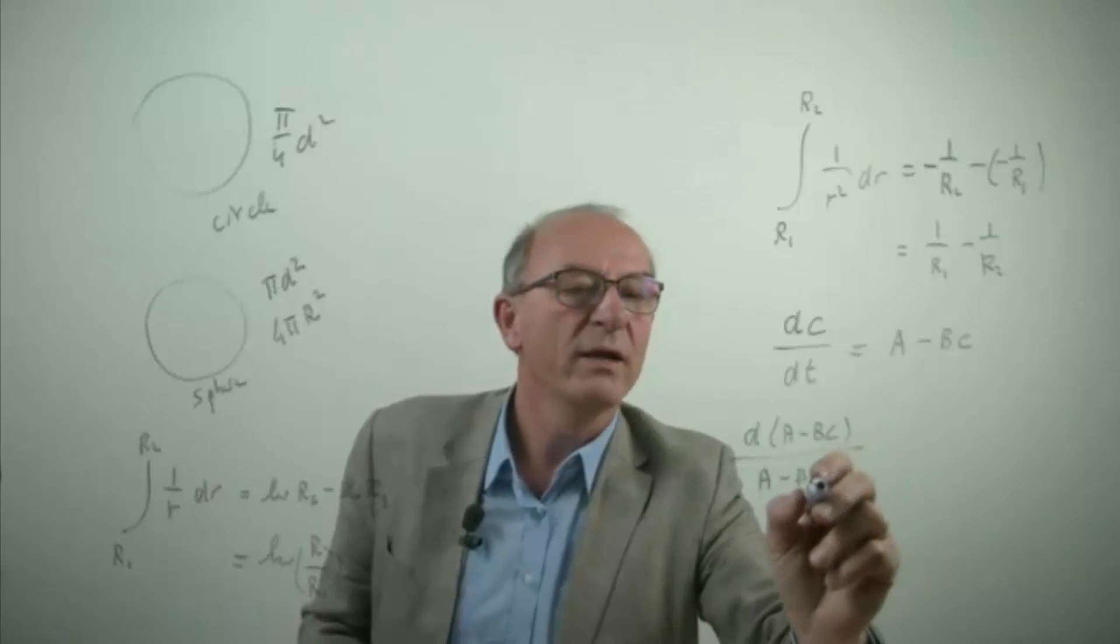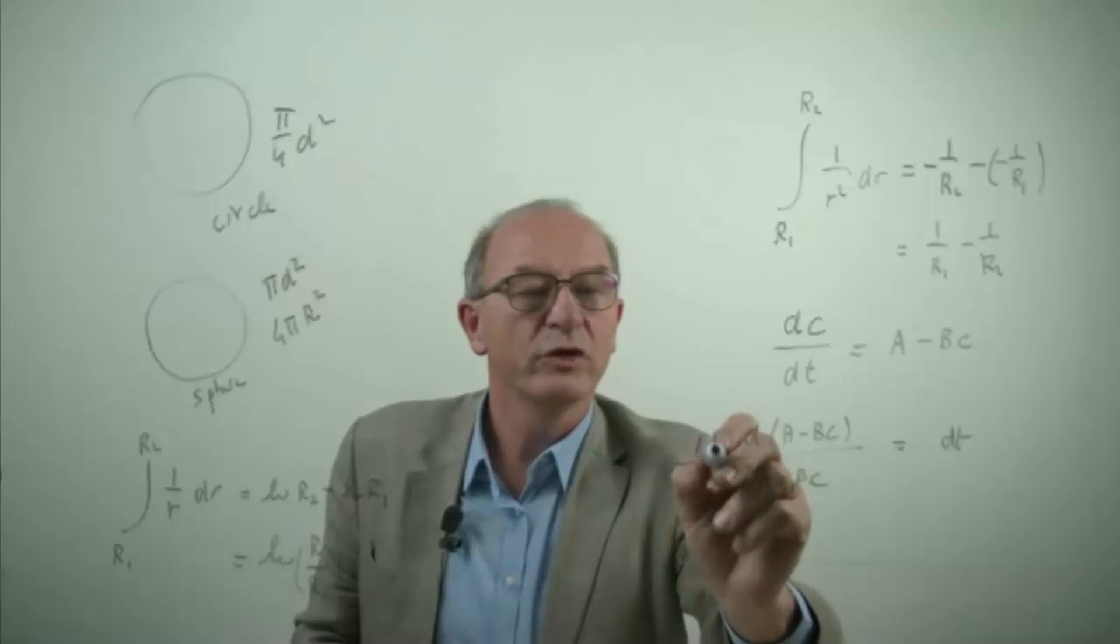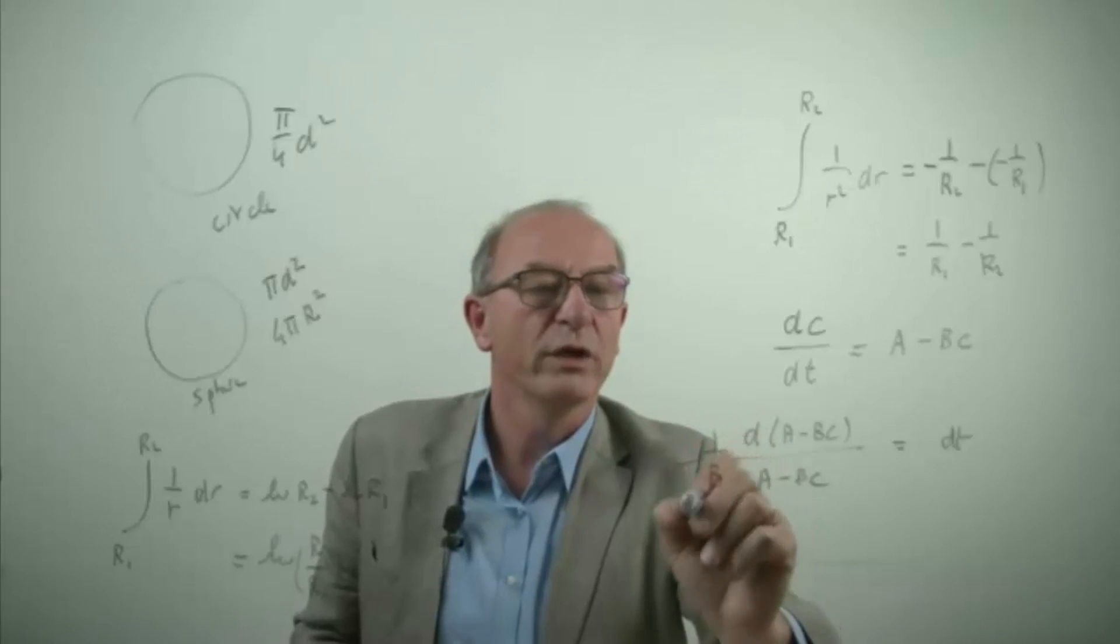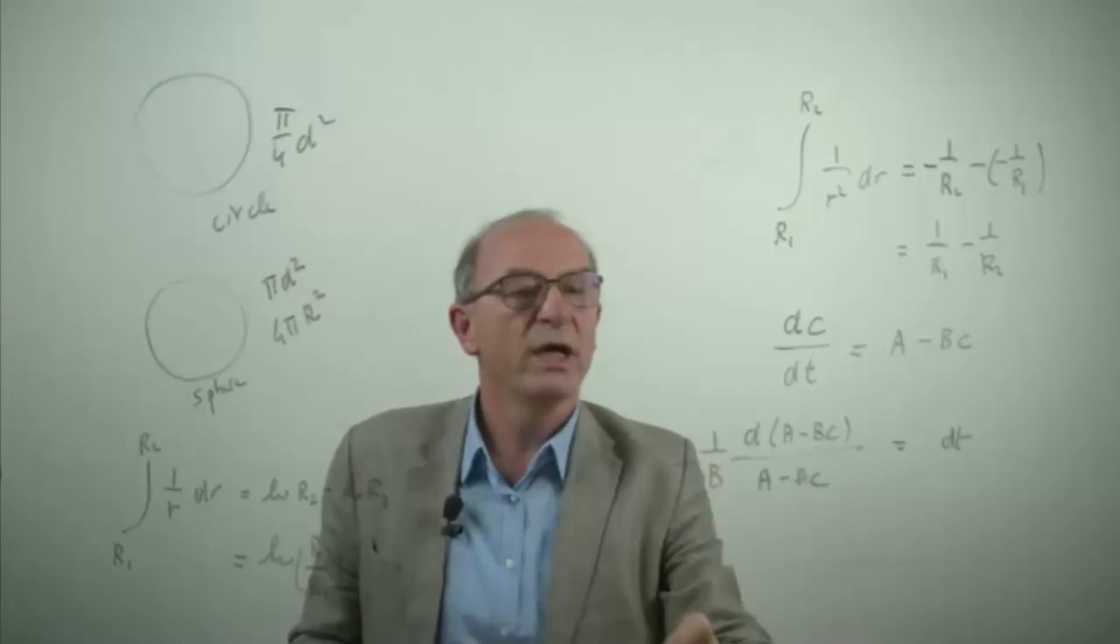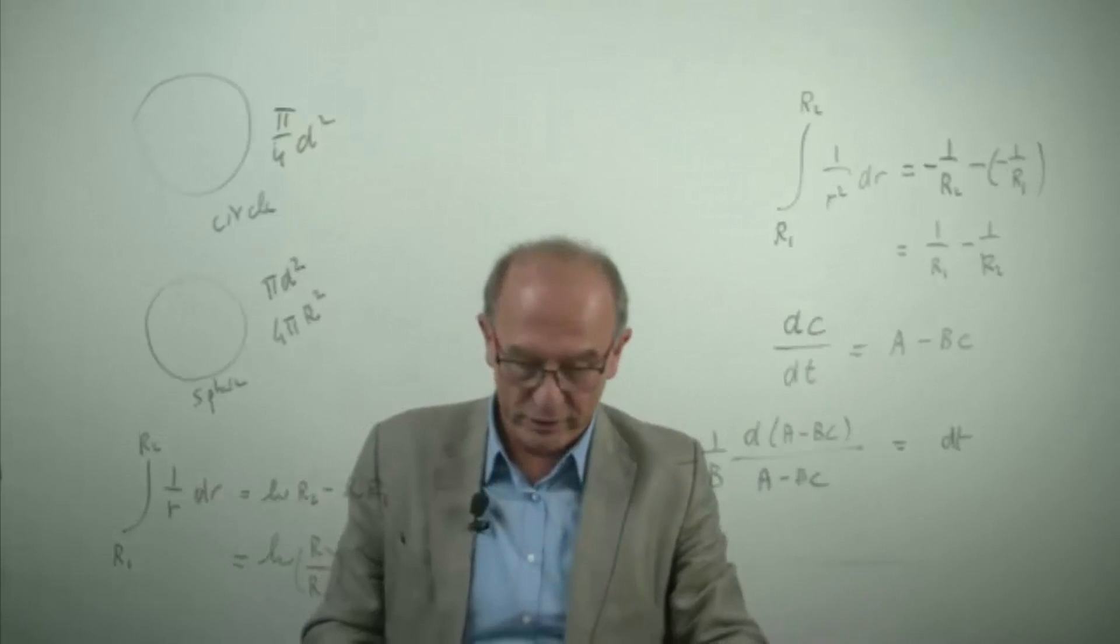But if you put it in this way, you have to realize that you have here to multiply with minus 1 over b, and in this way you can solve it, and then of course you get the logarithm which I treated here.